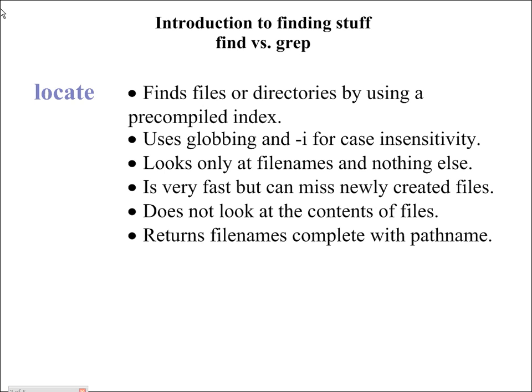Locate is a command that will find files by their file name. If you're looking for ifcfgeth0, that's just a name of a file. You can type in locate and the file name. You can use globbing, which we've learned about. You can use dash-i — locate dash-i — to turn off case sensitivity. And it will look through an index, not the hard drive or the file system, but an index that it's created.